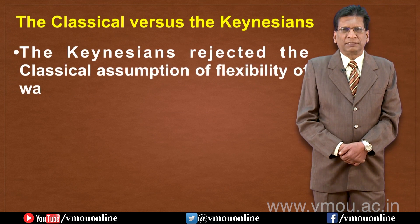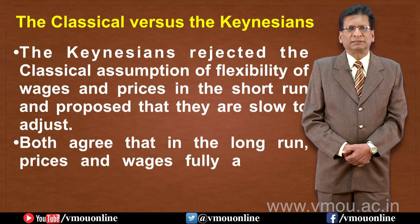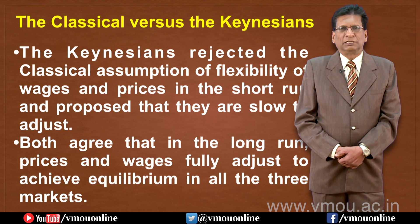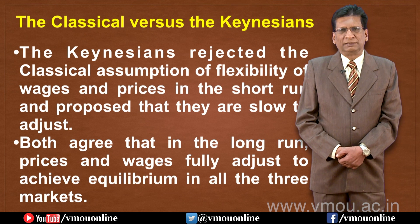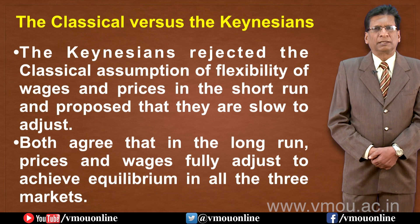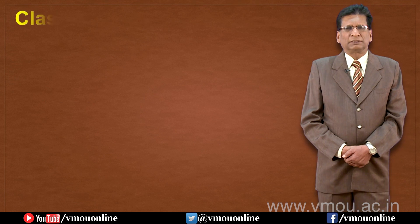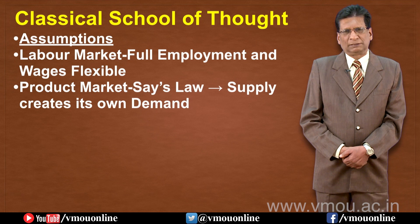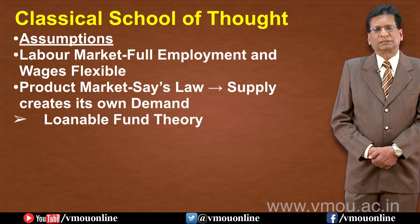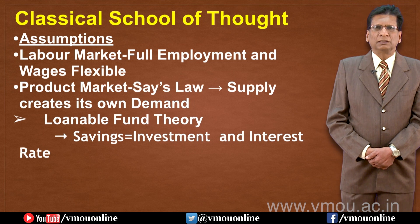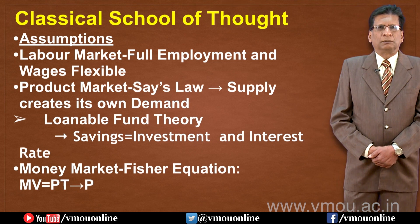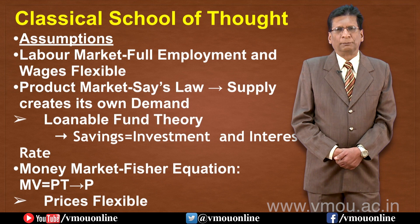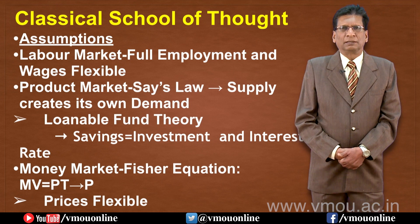Keynes rejected the classical assumption that wages and prices are flexible in the short run. In the long run, prices and wages can adjust to restore equilibrium, but in the short run they are not flexible. In classical theory, the labour market assumes full employment and flexible wages — if labour demand increases, wages rise; if labour demand falls, wages fall. Similarly, in the product market, supply creates its own demand.